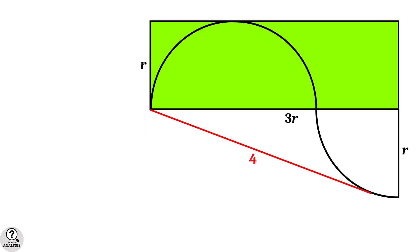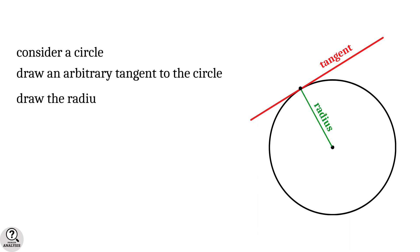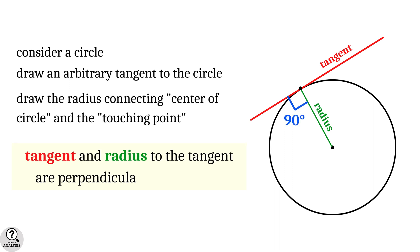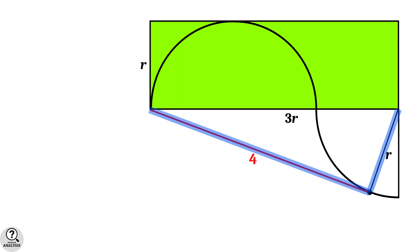Now come back to the problem and mark the touching point of the tangent, then draw the radius from this touching point. We need to note an important property of tangents to a circle: if you draw an arbitrary tangent to a circle and draw the radius from the touching point, then the tangent and radius are perpendicular to each other. Coming back to the figure, by this property, the tangent and radius from the touching point are perpendicular to each other.